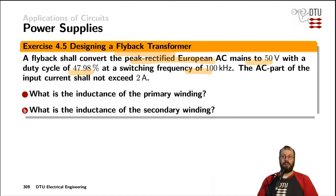The transformer is specified in a way that its current on the primary side shall not exceed 2 amps. What inductance do we need on the primary side? What inductance do we need for the secondary winding?